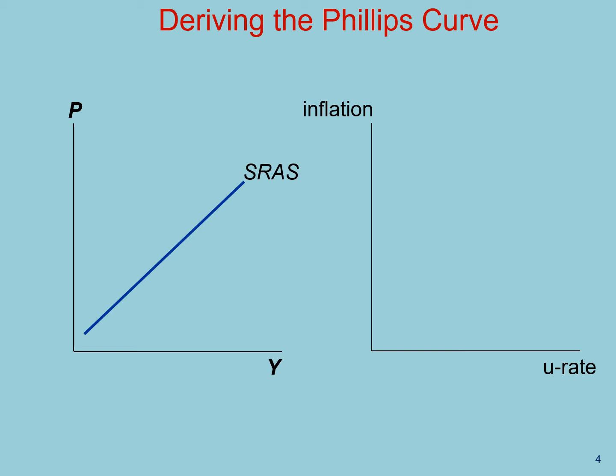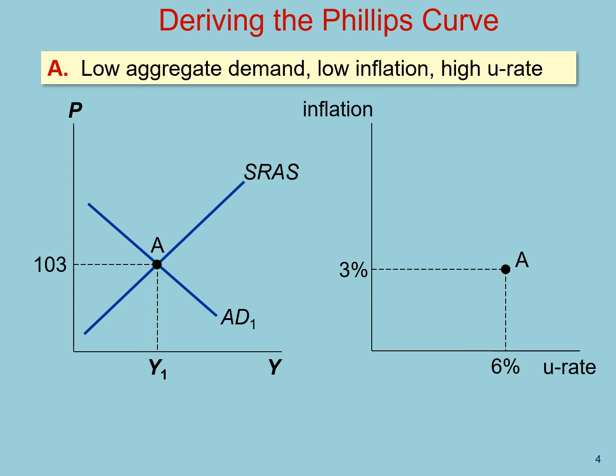We can use the aggregate demand-aggregate supply model to explain this empirical relationship. As a starting point, suppose that the price level equals 100 this year. If aggregate demand next year is slow, reflecting, for example, slow money growth, then outcome A will occur. In outcome A, the price level is 103 next year, so the inflation rate from this year to the next equals 3%. Output Y1 is relatively low, so unemployment is relatively high, at 6%.